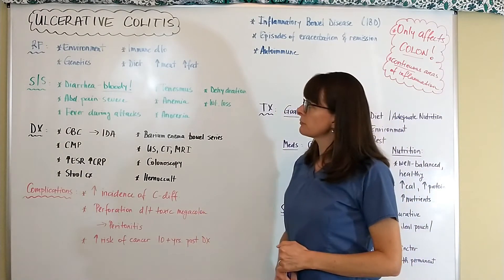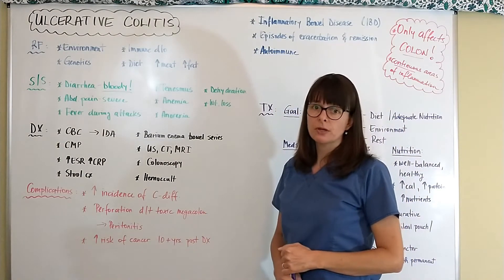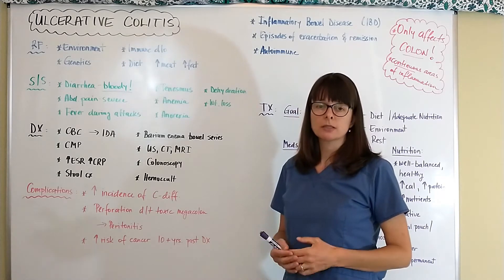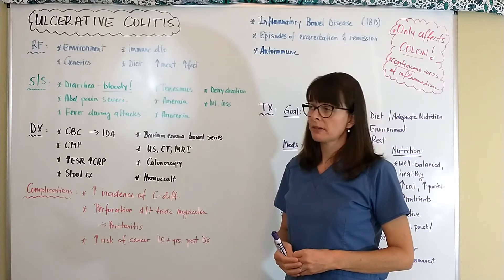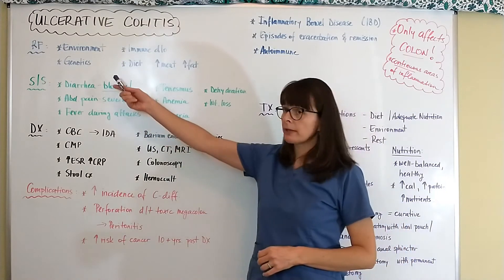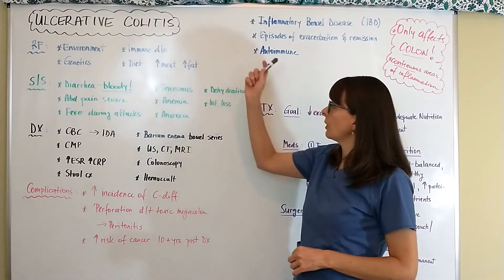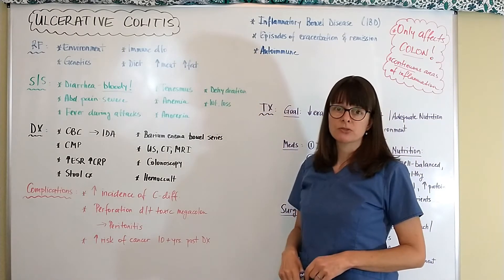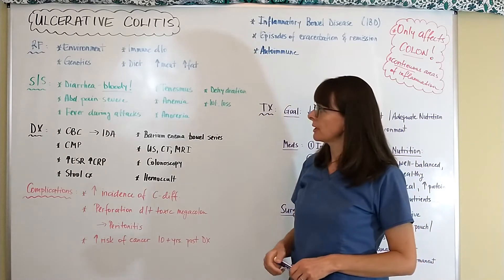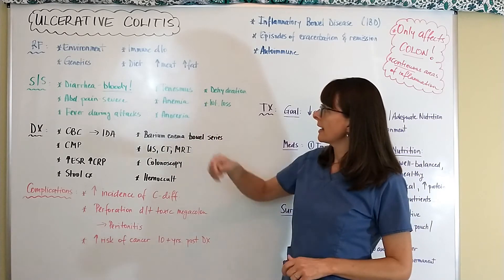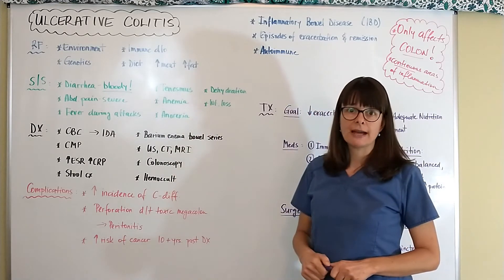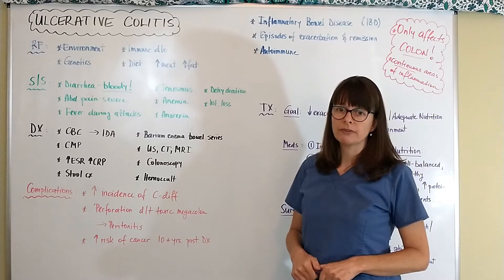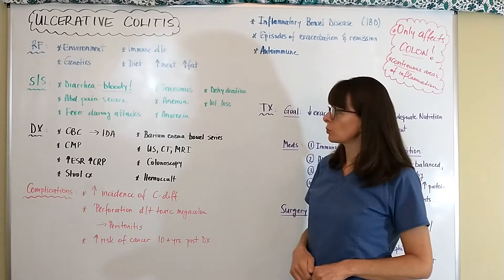Risk factors for developing ulcerative colitis include the environment, such as exposure to toxins or pollution, and smoking is a big factor. Genetics play a role, as in all autoimmune disorders. Other immune disorders put patients at risk as well, and a diet high in meat and high in fat is also a contributing factor.